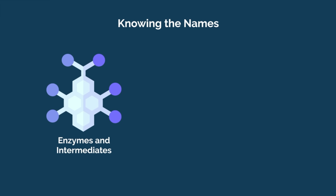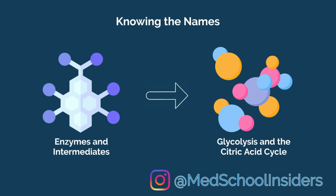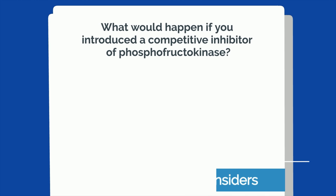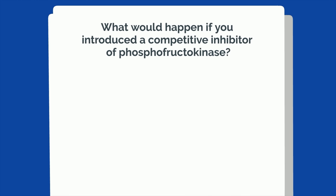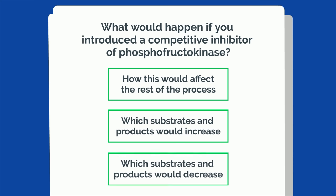For instance, knowing the names of all the enzymes and intermediates involved in glycolysis and the citric acid cycle isn't too helpful unless you also understand how they fit into the bigger picture. If you were tested on what would happen if you introduced a competitive inhibitor of phosphofructokinase, for instance, you should be able to say how this would affect the rest of the process, which substrates and products would increase, and which ones would decrease.